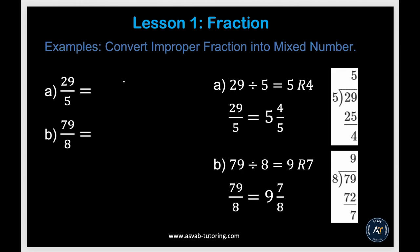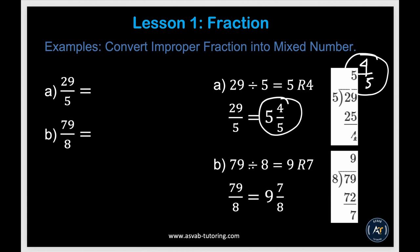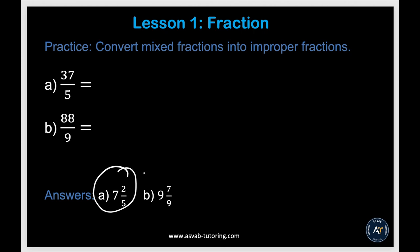Next, we'll learn how to convert an improper fraction into a mixed number. Whenever you see an improper fraction in a word problem, you need to turn it into a mixed number. Simply divide: 29 divided by 5 — 5 goes into 29 five times (5 times 5 is 25), with a remainder of 4. Write 5 and then place the remainder over the divisor: 5 and 4 over 5. Similarly, 79 divided by 8 gives 9 remainder 7, which is 9 and 7 over 8. Try the practice problems and make sure you get the correct answers.